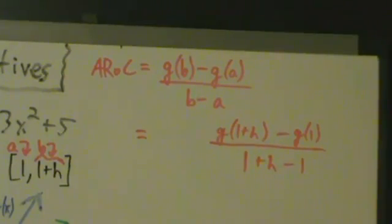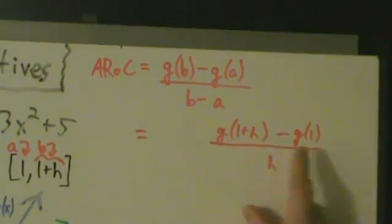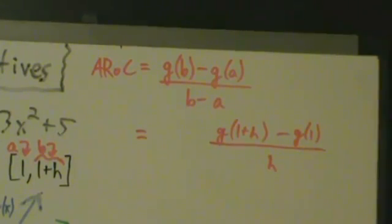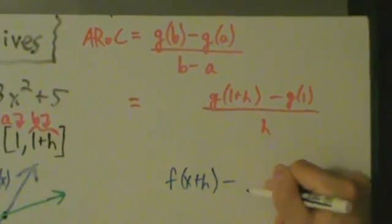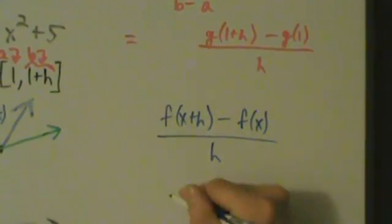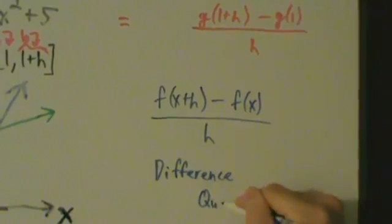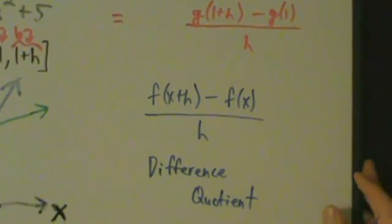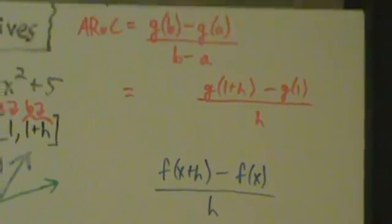Before we go further, let's simplify. 1 plus h minus 1 — the 1 and the minus 1 cancel, so we just have an h on the bottom. So g of 1 plus h minus g of 1, all divided by h — that's a specific example of what's called a difference quotient. In general, a difference quotient is something of the form f of x plus h minus f of x, all divided by h. You might have learned that in your pre-calculus days.